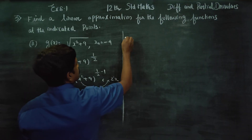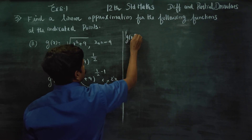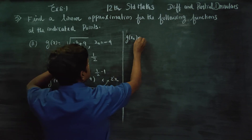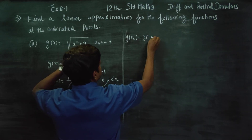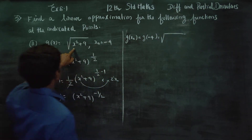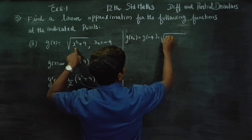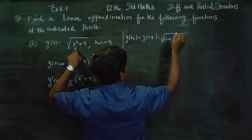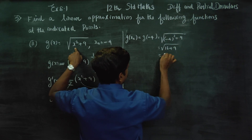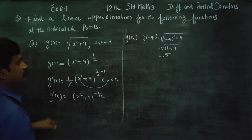Since x₀ = -4, we find g(x₀) = g(-4): substituting gives √((-4)² + 9) = √(16 + 9) = √25 = 5. So g(x₀) = 5.